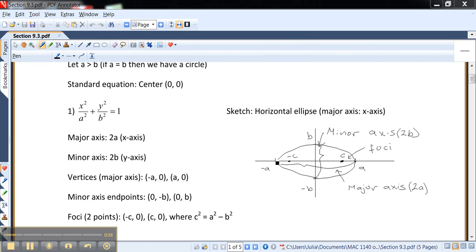We have a major axis, which is from here to here, which would be twice the a. The minor axis is similarly from negative b to b. And we also have foci points, which are always in the major axis. The way the c is defined is that c² is equal to a² minus b².